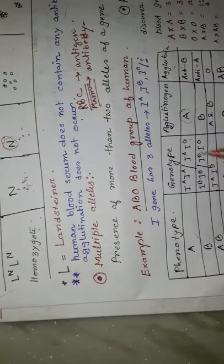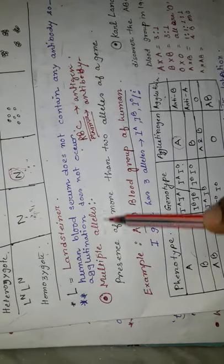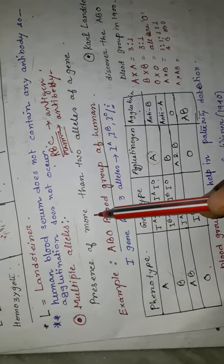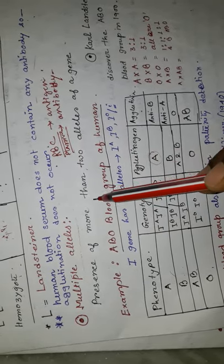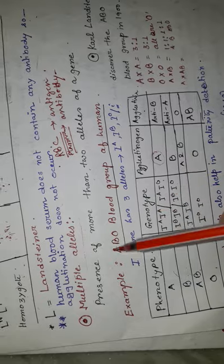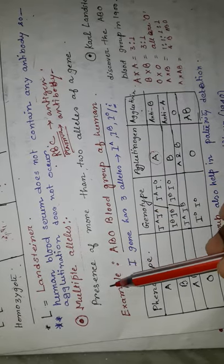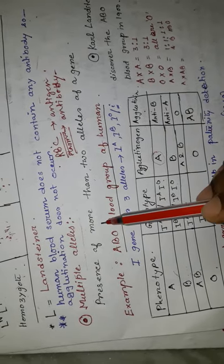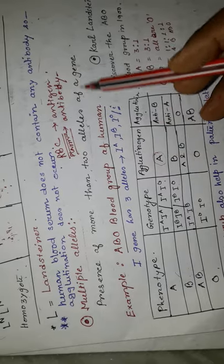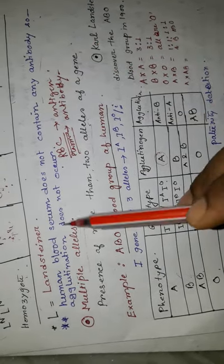Another deviation occurs in case of multiple alleles. What is multiple alleles? Generally, we know that each gene has two alleles. If in some cases the presence of more than two alleles of a gene is found, then this is called multiple alleles.